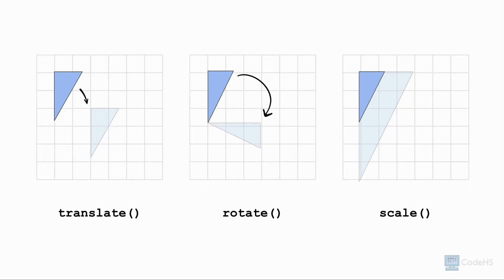Here are three different ways that shapes can be transformed in a P5JS sketch: translation, rotation, and dilation or scale.